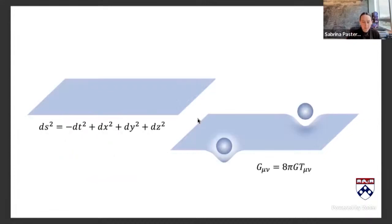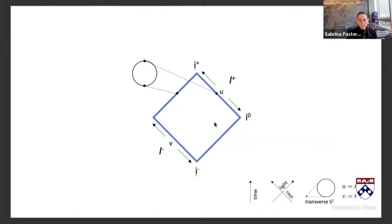Let's give the physicists' definition of asymptotically flat spacetime: I'm interested in solutions of Einstein's equations with zero cosmological constant but with matter, so I'm no longer in Minkowski space but in something where the metric is non-trivial, sourced by a matter stress field. I've drawn a double Penrose diagram. The data for massless fields comes in on a null surface called past null infinity, and the outgoing radiation is captured by data at future null infinity.